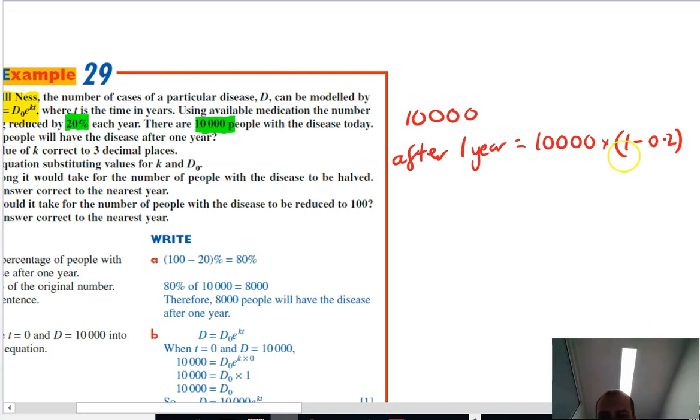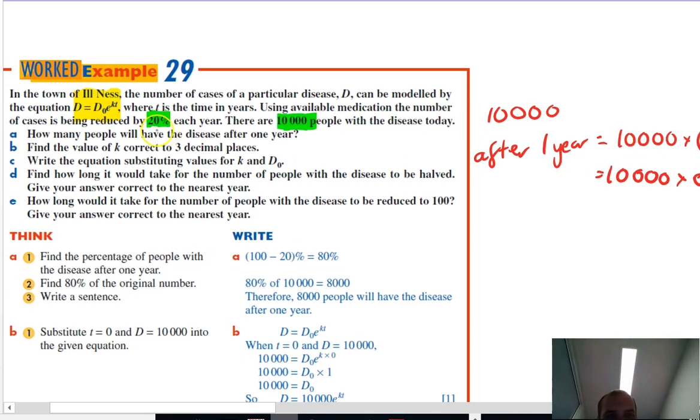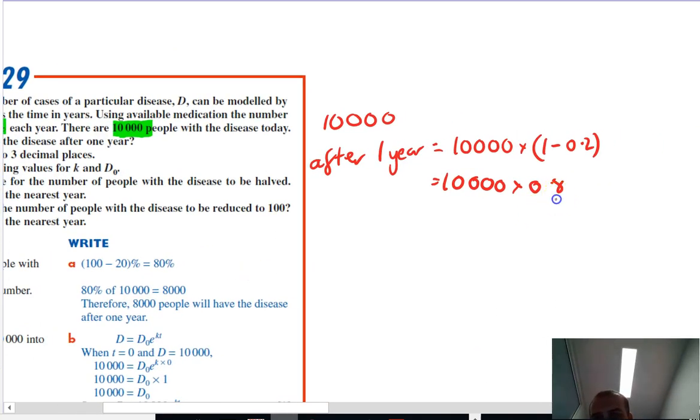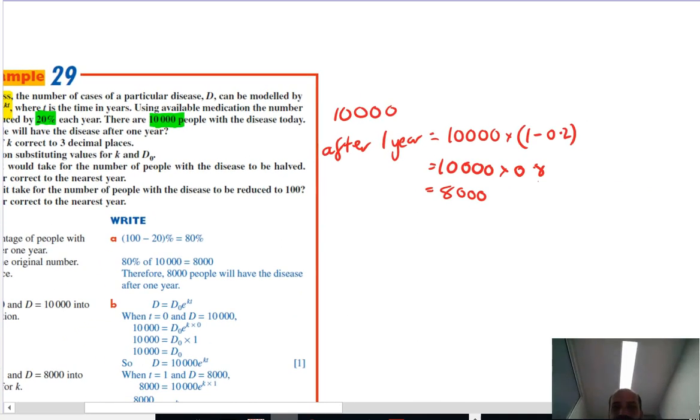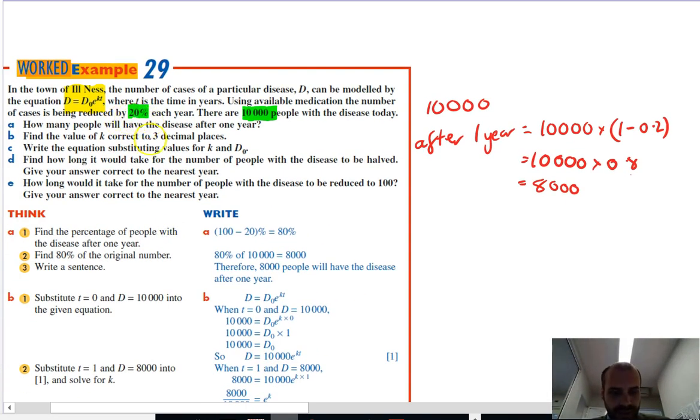Now, that's our percentages. So what I'm really doing is 10,000 times 0.8, because it says it's reducing by 20% each year, but that means that there's going to be 80% left. So just be really careful. If something's reducing by an amount, your decay rate's not going to be 20%.